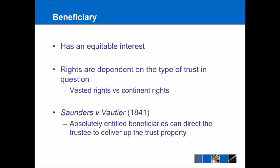Before we move on, it's important to look at the case of Saunders v Vautier. This involved an absolutely entitled beneficiary — a single beneficiary who is sui juris, meaning of age and of full mental and legal capacity. If they decide to, they can direct the trustee to deliver up the trust property. That person would then become the absolute owner of both the legal title and the beneficial title. So a trust relationship could be dissolved in that way if the beneficiary decides that is what they want.